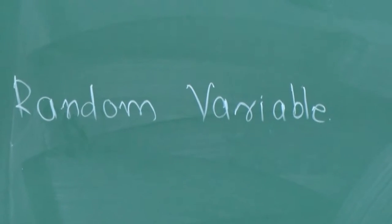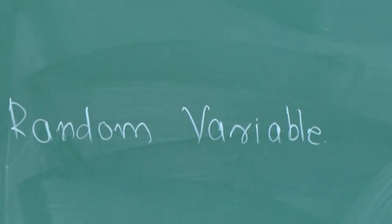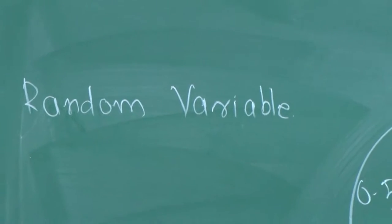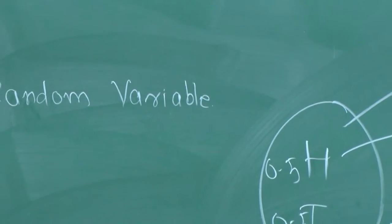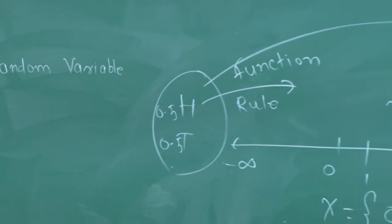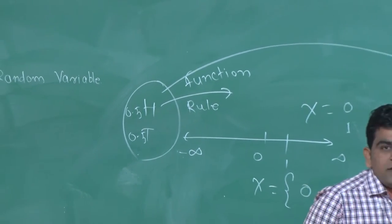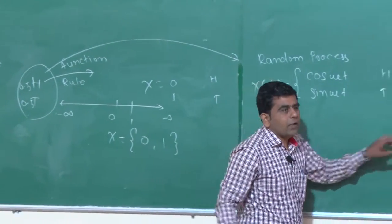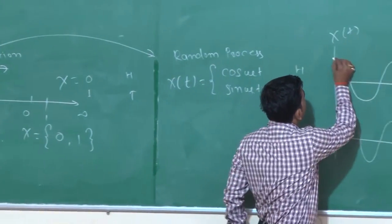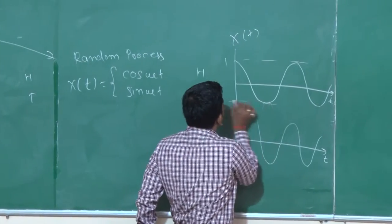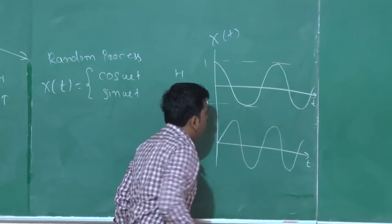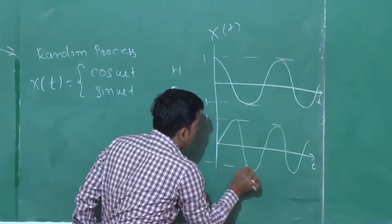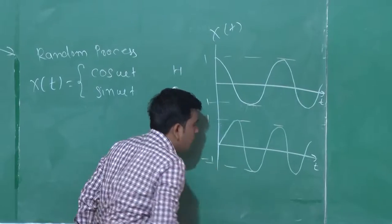Now, over this random process, we are having one independent parameter that is time. Again, these events, they are just changing their values. Just assume that this is 1 to minus 1. Similarly, 1, minus 1.